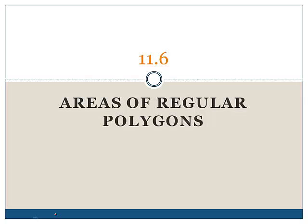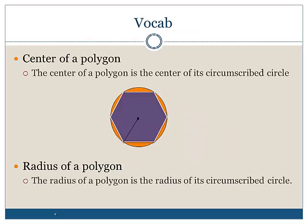11.6: Areas of Regular Polygons. Before we start, let's review. Do you remember what it means to construct a circumscribed circle? We'll start with some vocabulary.